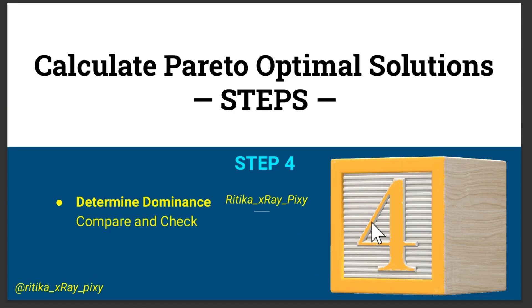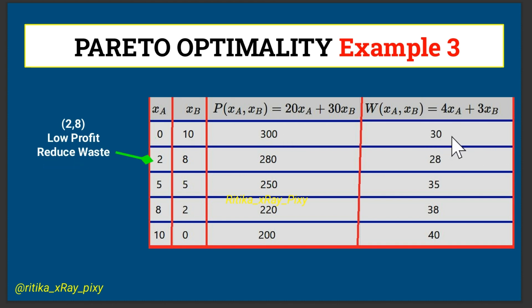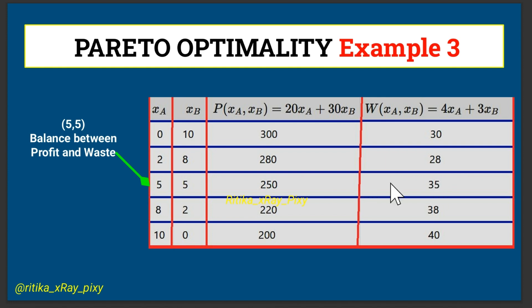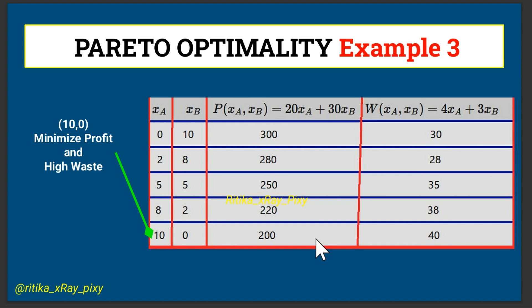Now we determine the dominance. When xA = 0 and xV = 10, it maximizes profit at 300 but results in highest waste of 30. When xA = 2, xV = 8: slightly lower profit of 280 but reduced waste. When xA = 5, xV = 5: a balance between profit (250) and waste (35). When xA = 8, xV = 2: reduced profit but increased waste of 38. When xA = 10, xV = 0: lowest profit and highest waste.